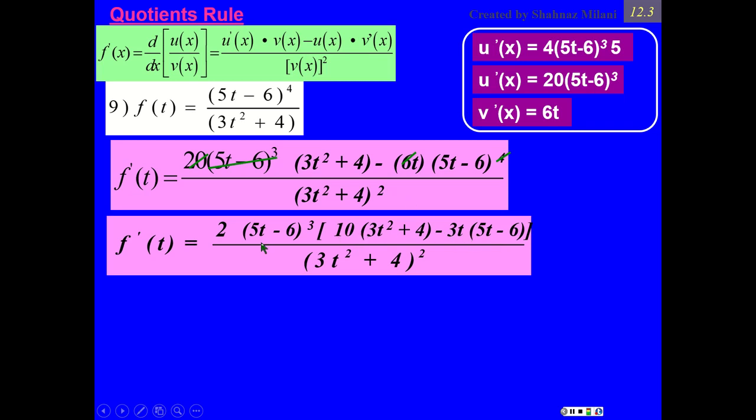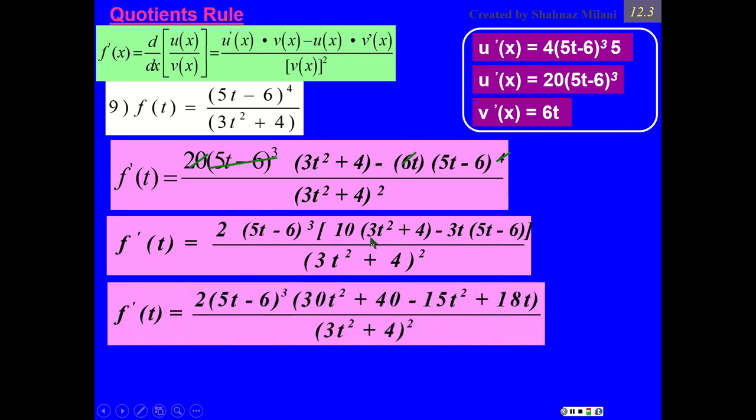Now, from here, the GCF just carried on. And here, inside the bracket, 10 times inside this parenthesis means 10 times 3t to exponent 2, which becomes 30t to exponent 2, 10 times 4 is 40. Then, minus 3t times 5t is minus 15t to exponent 2, minus 3 times minus 6 becomes positive 18t.